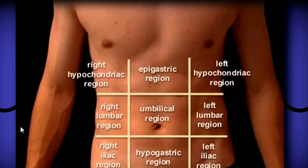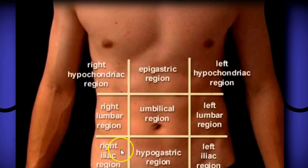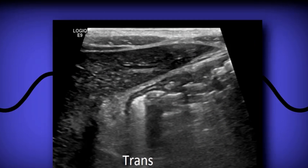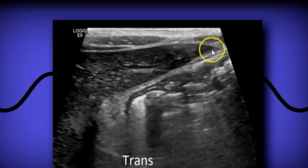Here's an interior abdominal wall — it's very similar to the four quadrants with the added epigastric, umbilical, and hypogastric regions. To begin, you scan in the epigastric region transverse and you get the tip of the left lobe of the liver.